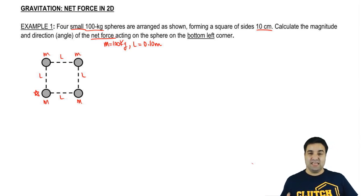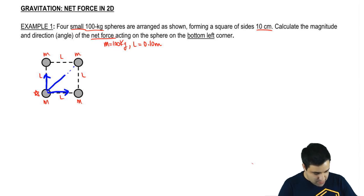So remember, the idea is that masses, according to the universal law of gravitation, attract each other. So this guy is going to get pulled up by this force. It's going to get pulled to the right by this mass, it's going to get pulled to the right by this other mass, and it's going to get pulled in this direction by this other mass over here.